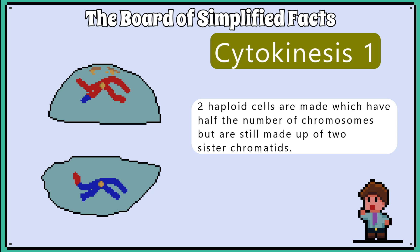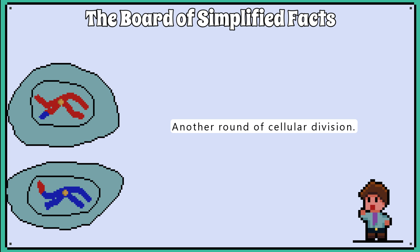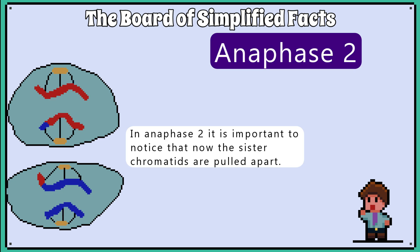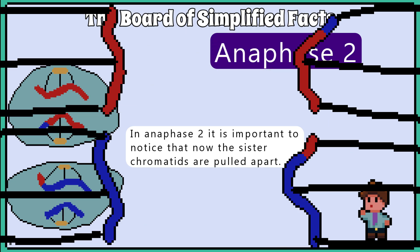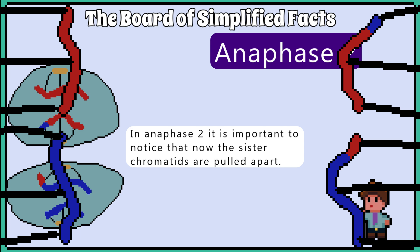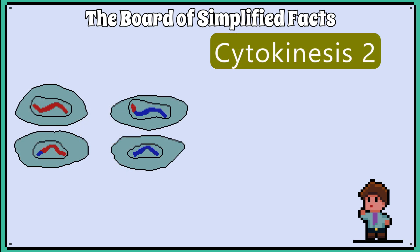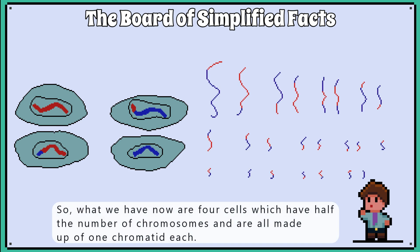So they are no longer diploid cells, but haploid cells, as they have half the number of chromosomes. Then we repeat the division process again, but now label each stage with a two — so prophase 2, metaphase 2, etc. In anaphase 2, it is important to notice that now the sister chromatids are pulled apart, and then cytokinesis 2 follows. So now we have four cells which have half the number of chromosomes and are all made up of one chromatid each.